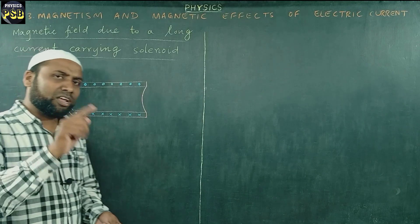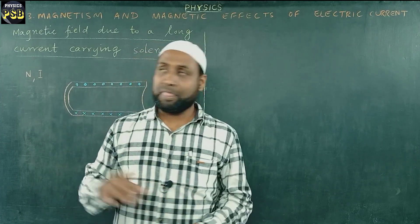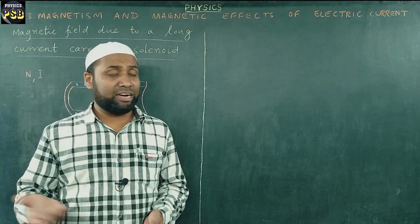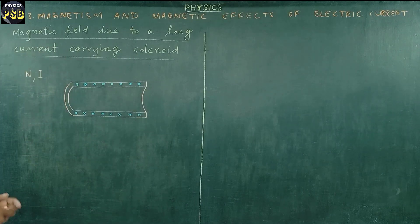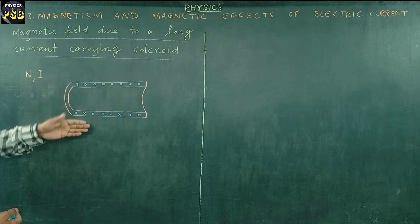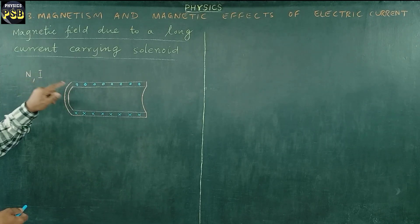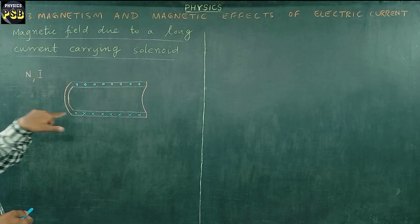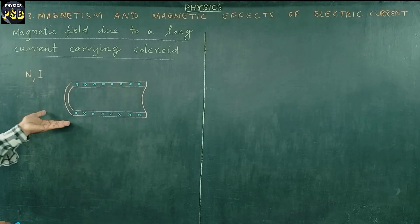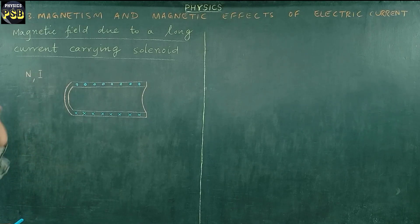In physics, wherever you come across a cross, it means the field or current is going inward, and dots represent the outward flow — whether it is magnetic field, current, or electric field. So this is one end of the winding and this is another end. The solenoid has N number of turns, so through them the current flows — going inward from the lower end and coming out from the upper end.